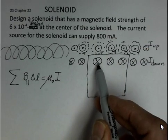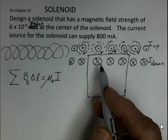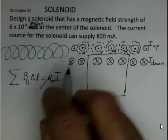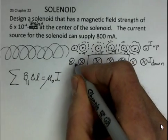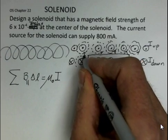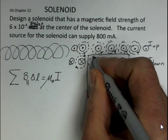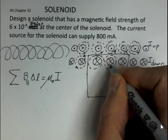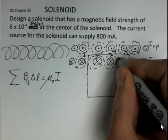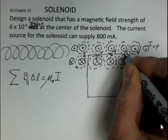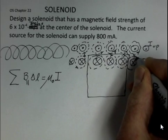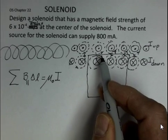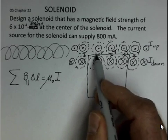For the currents down here they're going into the paper, so for my right-hand rule here I have to put my thumb down into the paper and then my fingers show the direction of the magnetic field, and they're this way. And hopefully you can see what's happening inside the solenoid. The magnetic field lines are adding up inside the solenoid, and that generates the magnetic field that's in here. It's not quite uniform, but they are adding up.